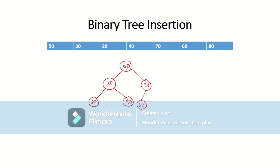The next is 80. 80 is greater than 50 and greater than 70, so it goes on the right side. As a result of this insertion, we get a balanced tree — every node has two children. However, you will not always get a balanced tree from binary tree insertion. Some nodes may have only one child, and some nodes will have no children.